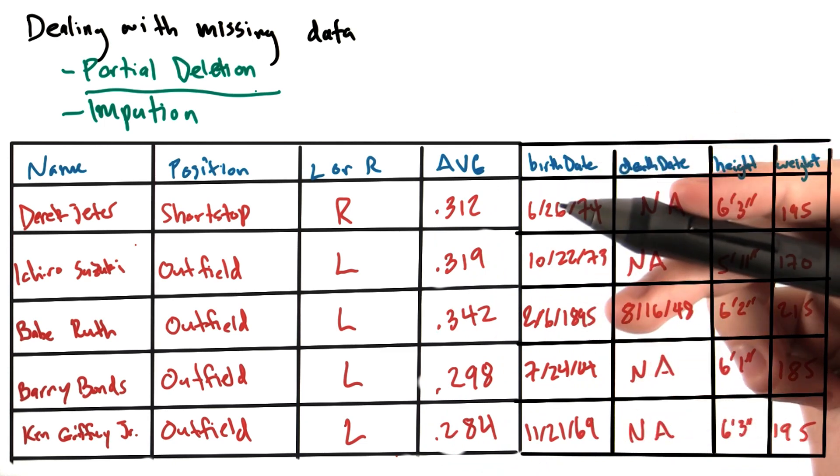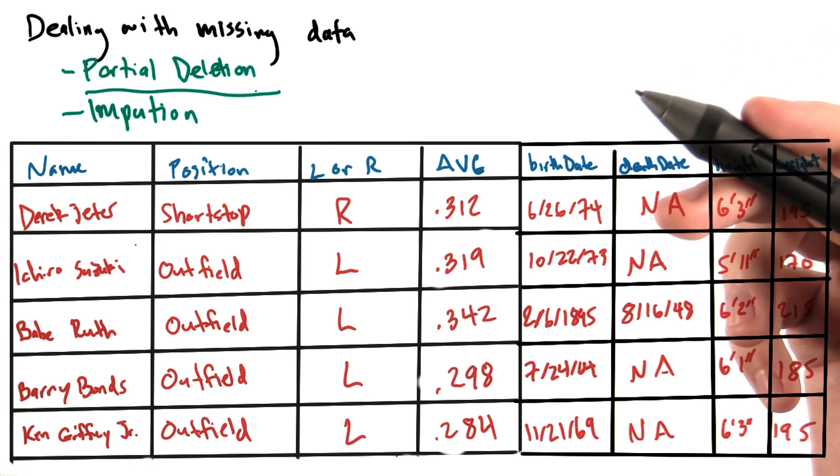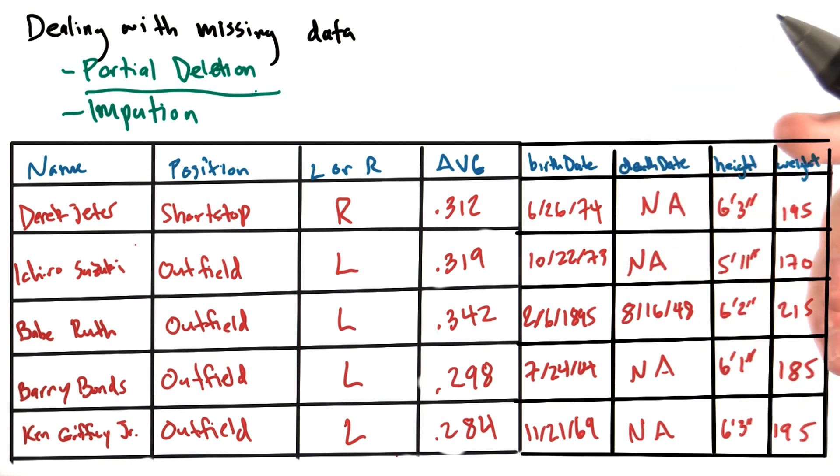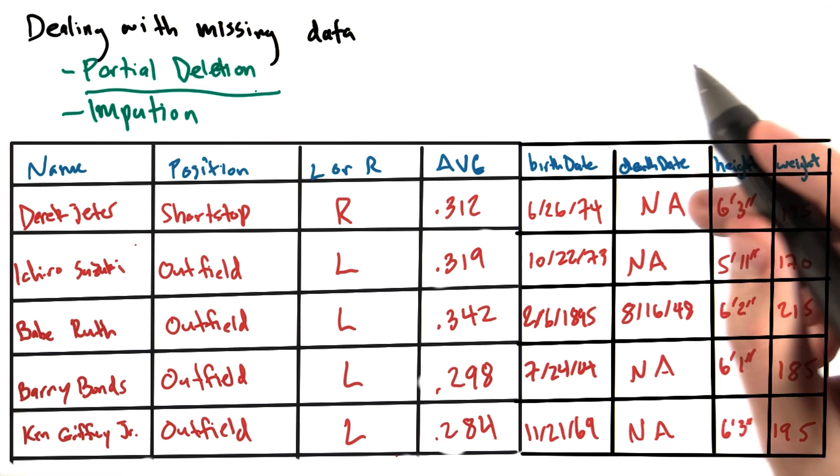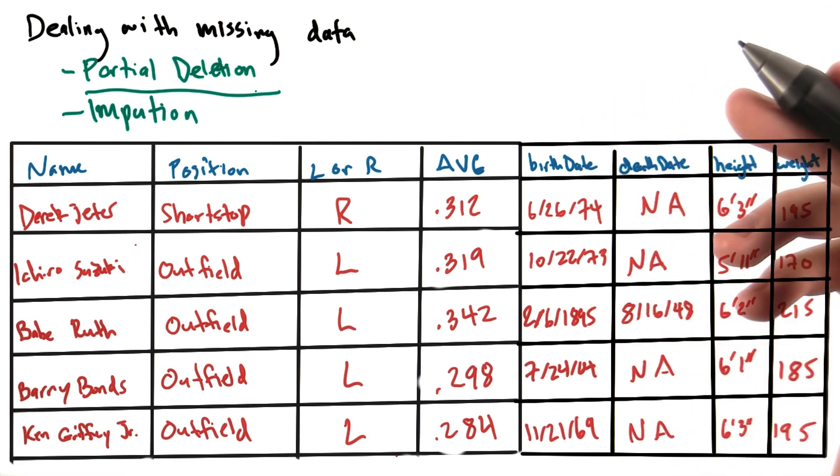There are many players we can't include in the analysis, either because their birth date or death date is missing, or because they're still alive. In this case, we may want to perform partial deletion.